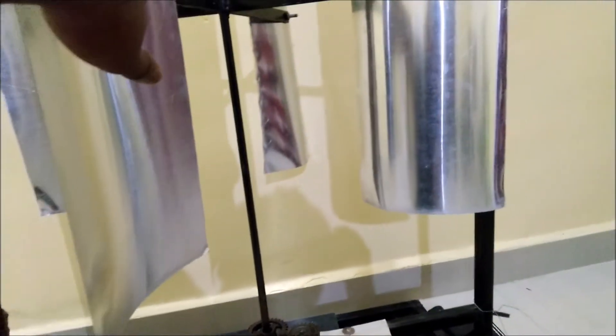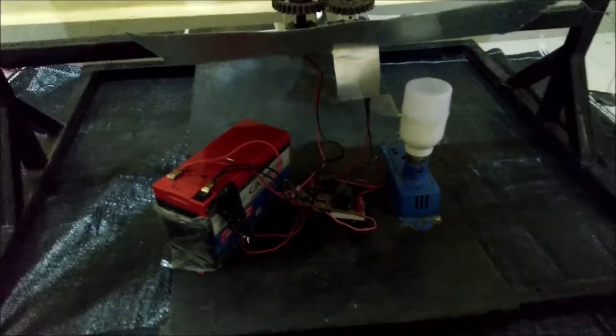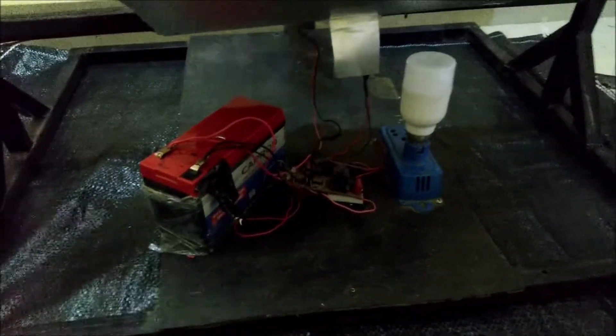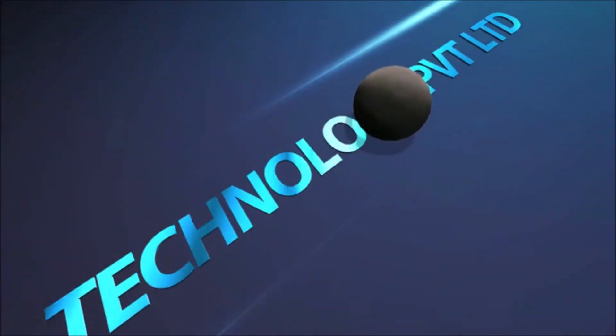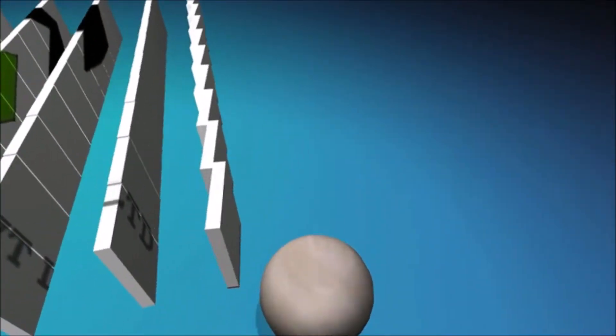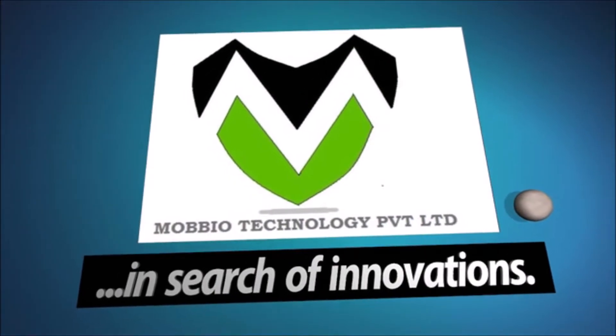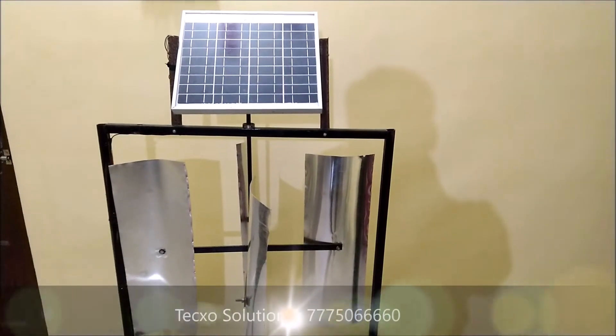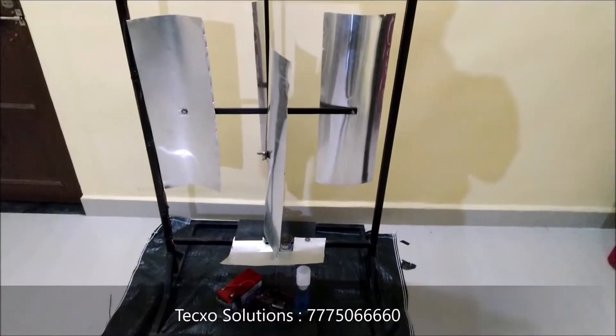Let's get started. This is a model of a hybrid power generation system with the help of a solar panel and vertical axis wind turbine.